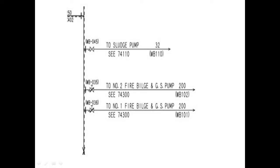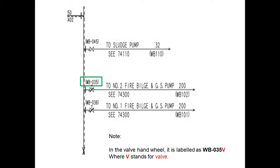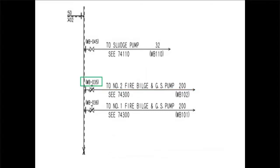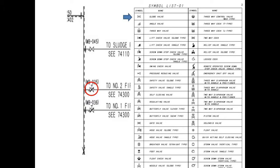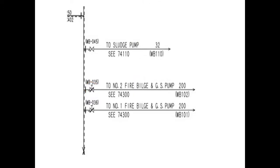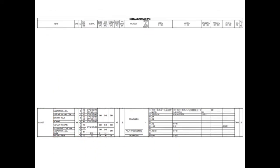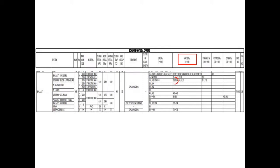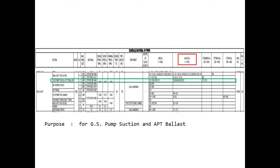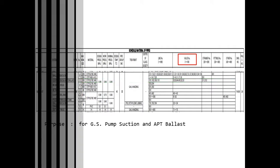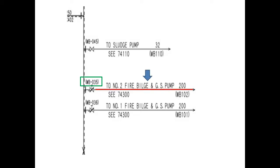Now let's take a look at the valve. The name of this valve is WV 035. As you can see, it is clearly labeled that the valve leads to fire, bilge, and GS pump, and the drawing number is there as a direction where you will trace it next. This WB 035 means a whole lot of things. Starting with the symbol, this tells us that this valve is a globe valve. The symbol WB means that this valve is part of the ballast system. Valve mark 35 means this valve is intended for GS pump suction and after-peak ballast, and the line is indeed to fire, bilge, and GS pump.